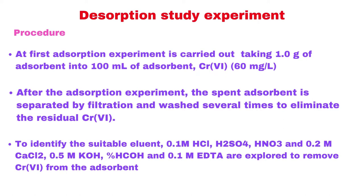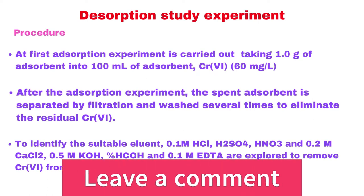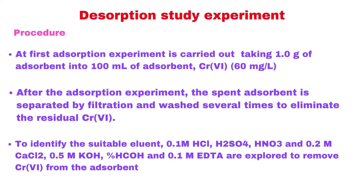Then, after the adsorption experiment, the spent adsorbent is separated by filtration and washed several times to eliminate the residual chromium. To identify the suitable eluant, 0.1 molar HCl, sulfuric acid, nitric acid, 0.2 molar calcium chloride, 0.5 molar potassium hydroxide, 5% formic acid, and 0.1 molar EDTA are explored to remove chromium from the adsorbent.